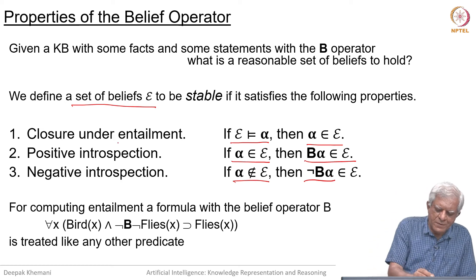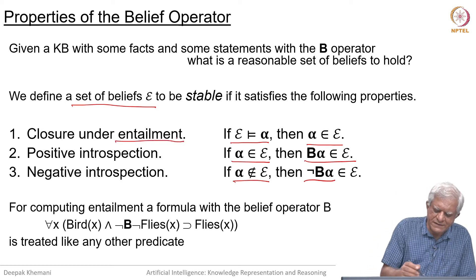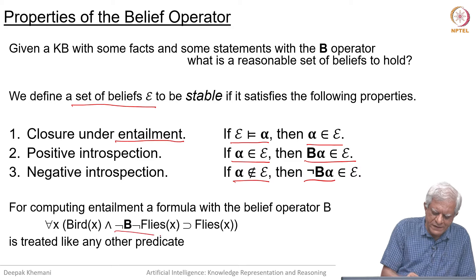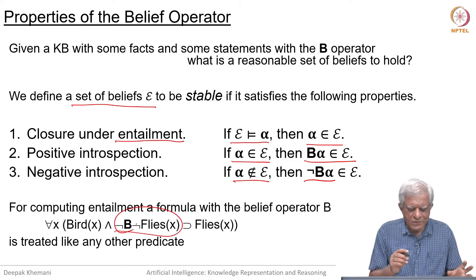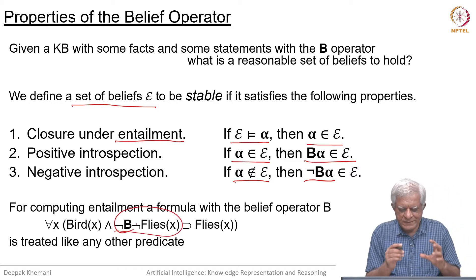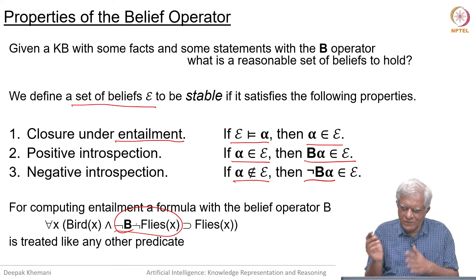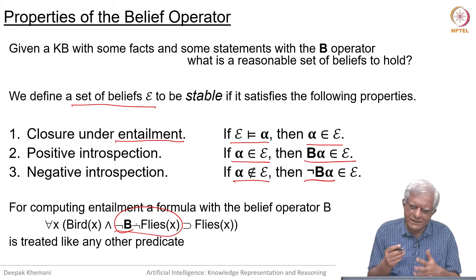When we talk about entailment, we just treat this whole thing as just another predicate. If it is true on the left-hand side, then we go to the right-hand side.